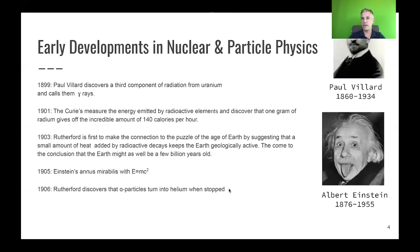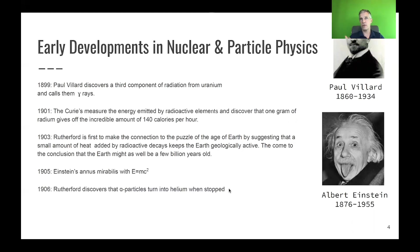Uranium and other radioactive materials were further studied. Paul Villard discovered a third component of radiation behaving differently from the other two, calling it gamma rays — again following the Greek alphabet. Rutherford then connected these findings to the question of the age of the Earth, suggesting that radioactive elements in ores and the Earth's core provide an additional heat source sufficient, due to thermal conductivity, to keep the Earth geologically active, and concluding the Earth may well be a few billion years old — as we now know it is.